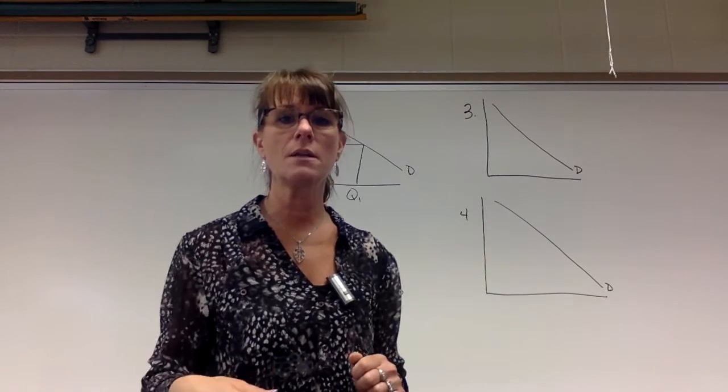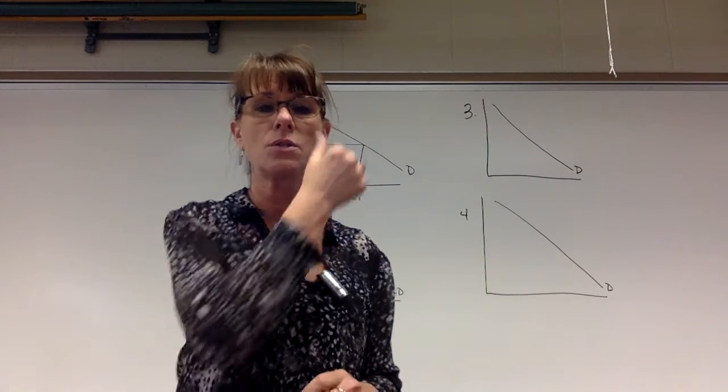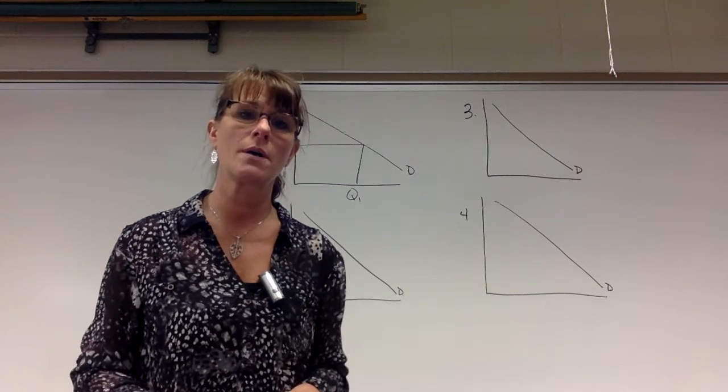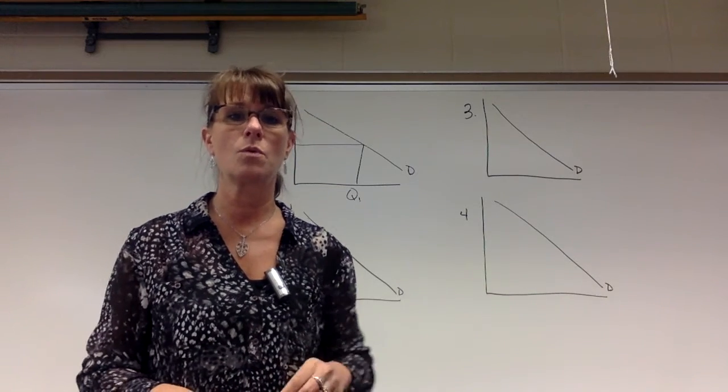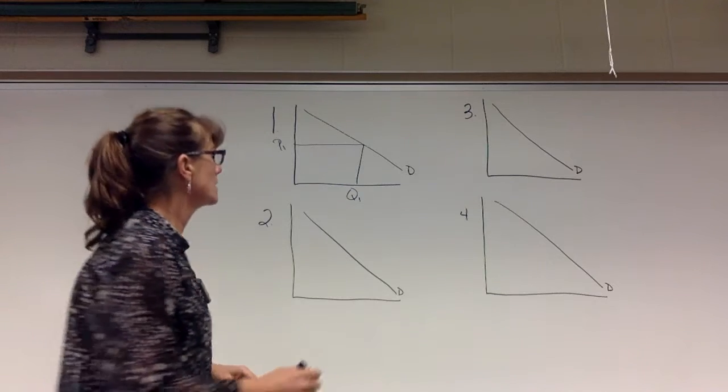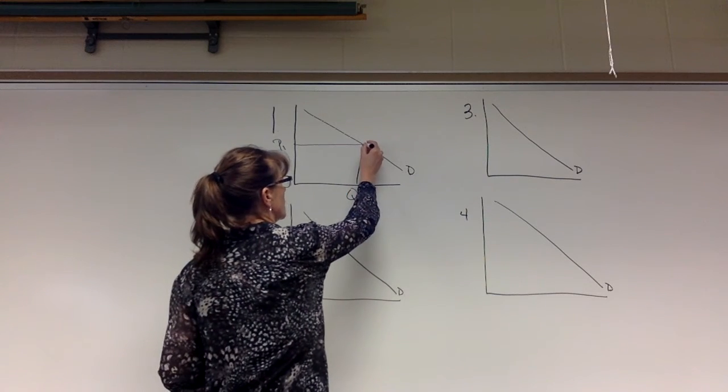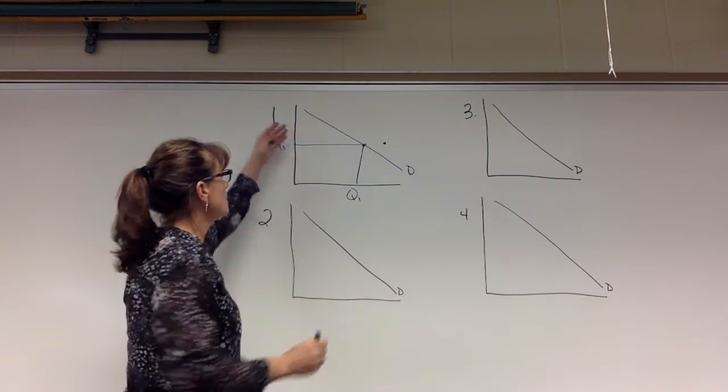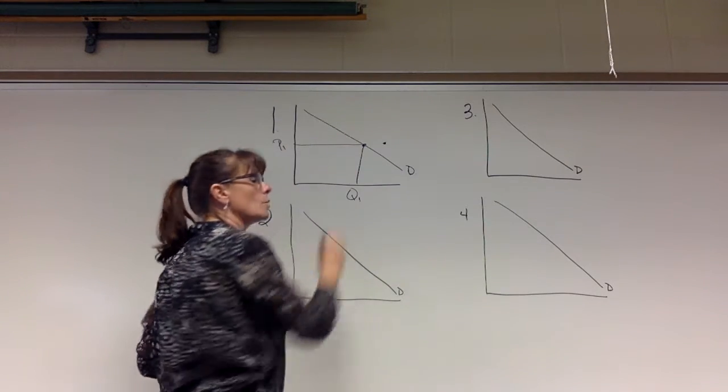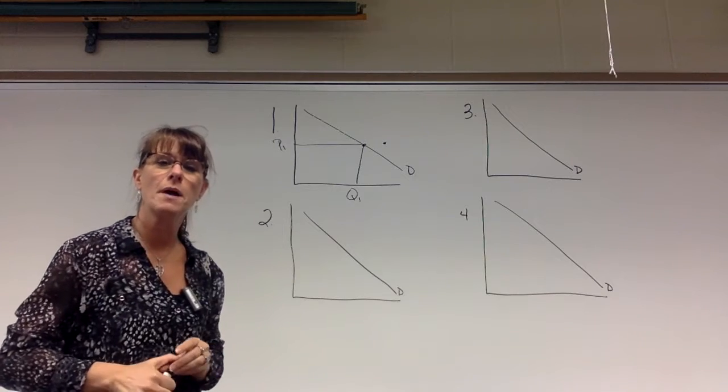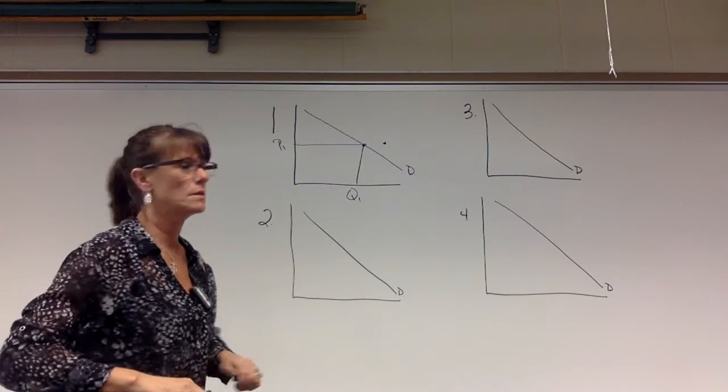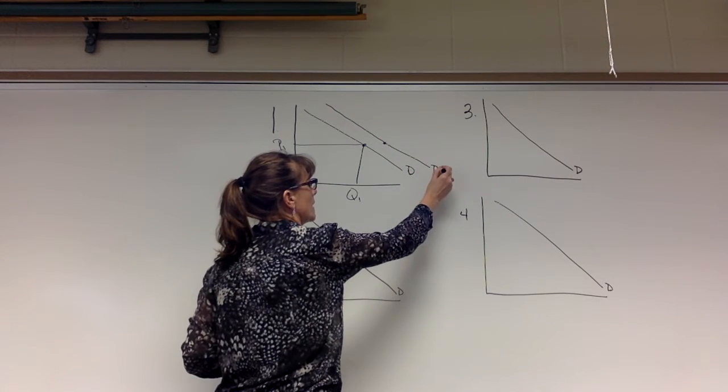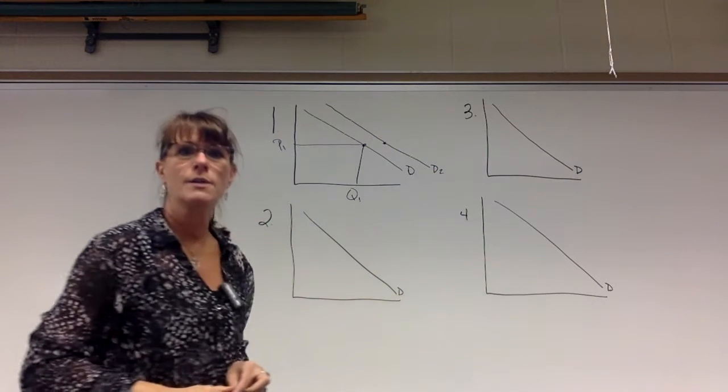Our quantity demanded of hamburger is going to go down because these two things are substitutes. So if we're buying less hamburger and we don't change the price of tuna, then tuna is more attractive to us because it is the same price and it's not going up. So at that price, we now are willing and able to buy more. And even if the original price were higher, we're still going to be willing and able to buy more just because of the price relative to hamburger. So we're going to create a whole entire new curve, and that is going to be our new demand curve.